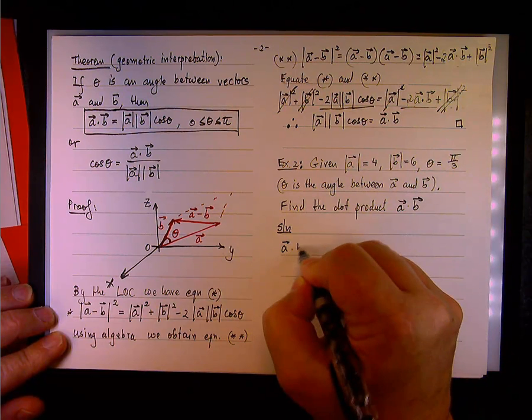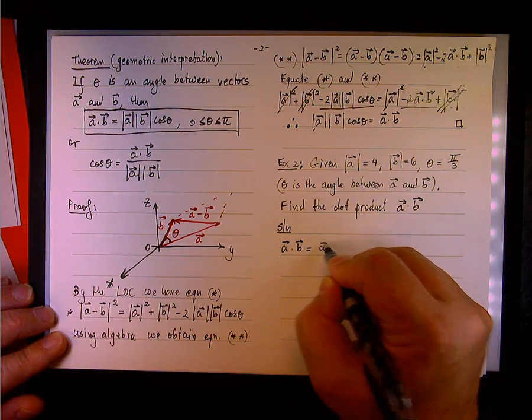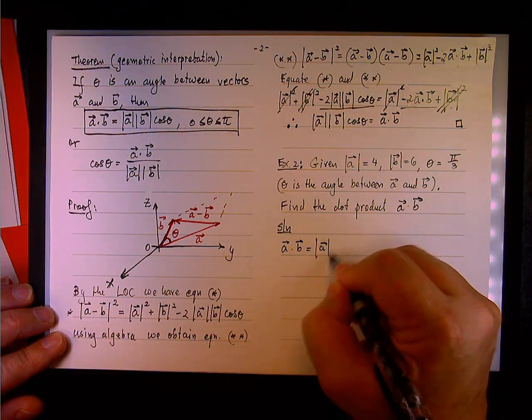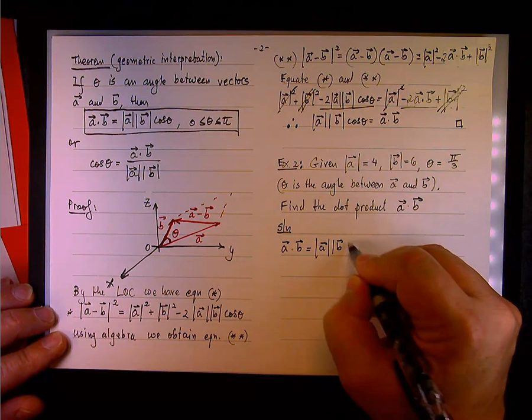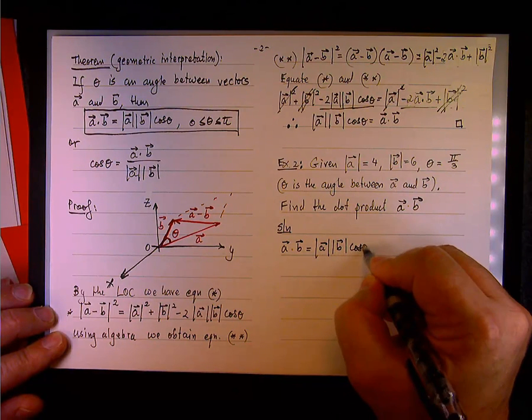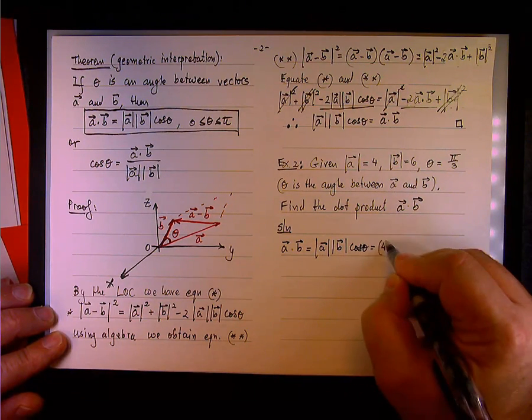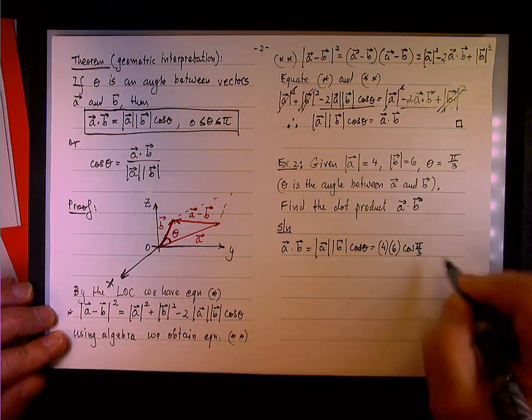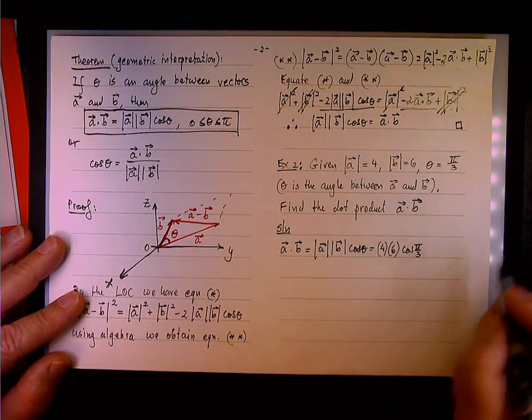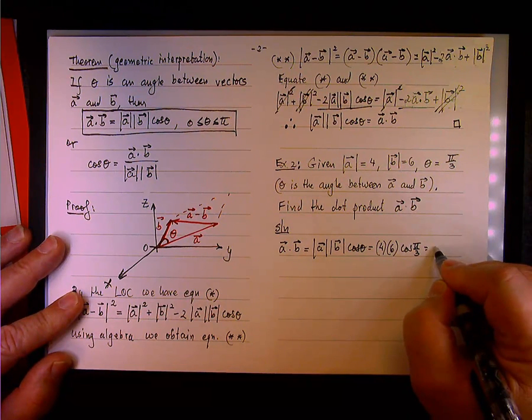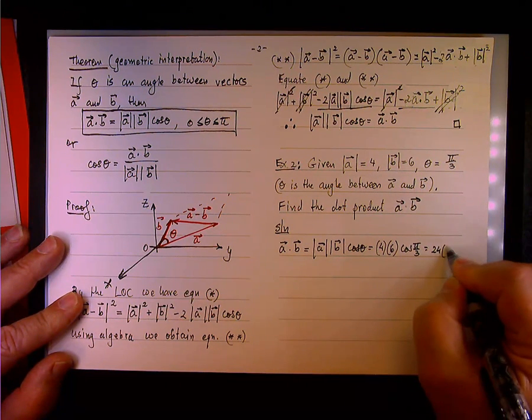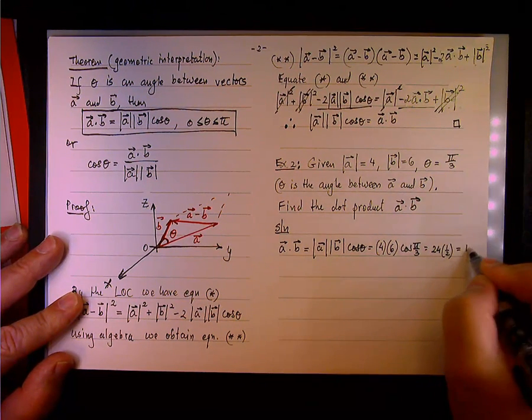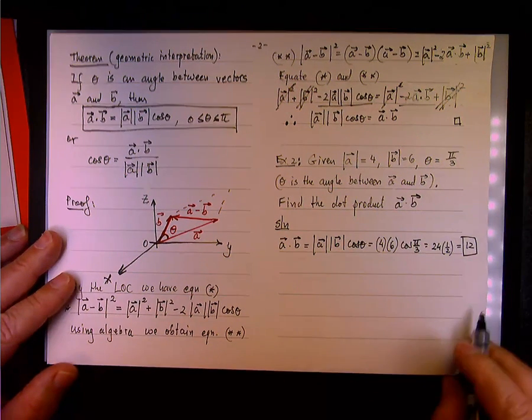The solution is pretty straightforward. We have that the dot product, the product of the magnitude of A and B times cosine theta, so we are looking at 4 times 6, cosine of pi over 3. The cosine of pi over 3, of course, is 1 half, so it's 24 times 1 half, or 12.